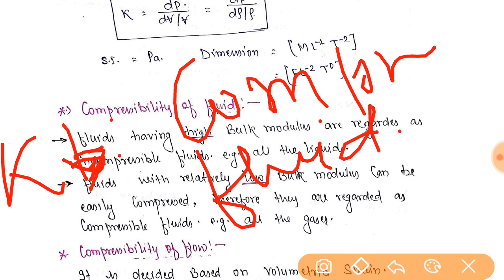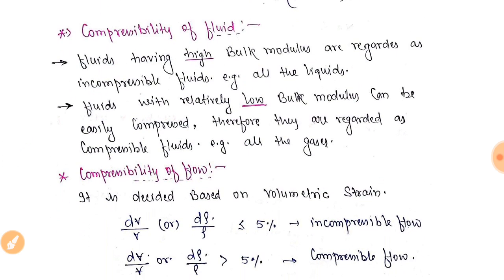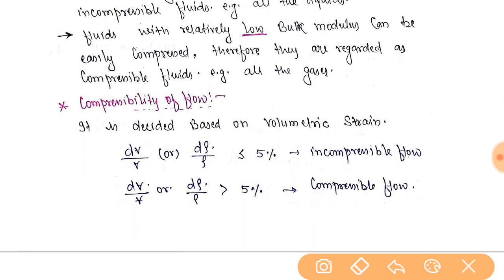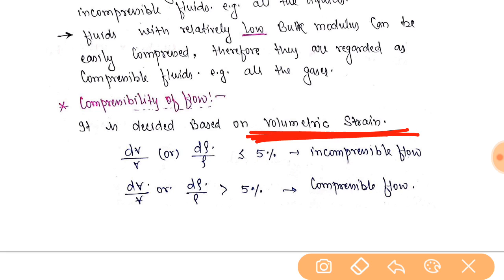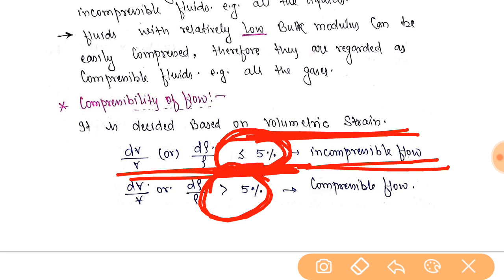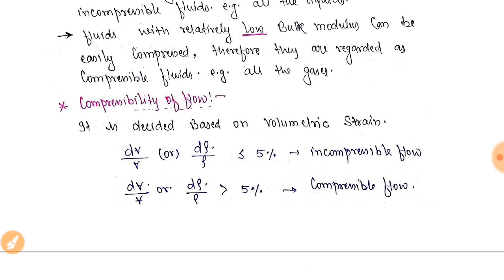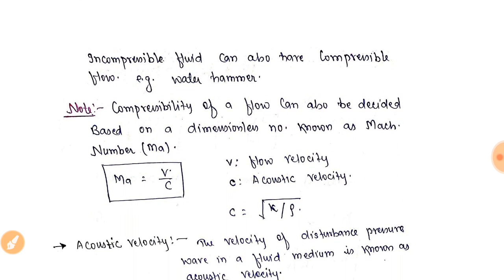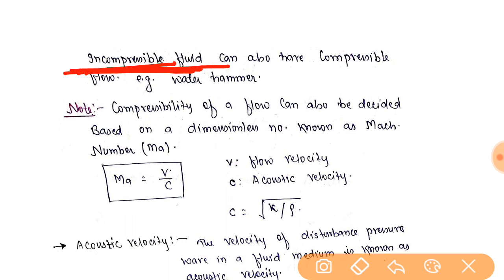This was compressibility. Next comes compressibility of flow. Compressibility of flow is decided based on the volumetric strain. If volumetric strain is less than 5%, we call it incompressible flow, and if it is greater than 5%, we call it compressible flow.